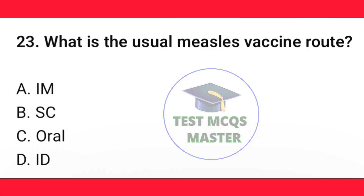Question number 23. What is the usual measles vaccine route? The correct option is B — subcutaneous.